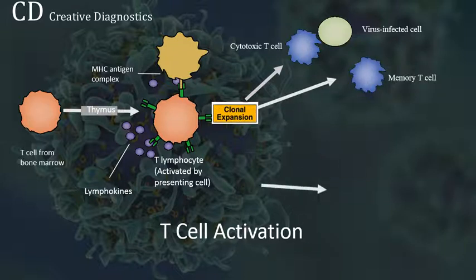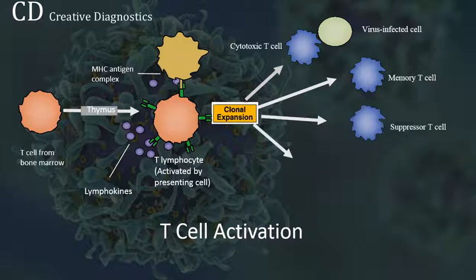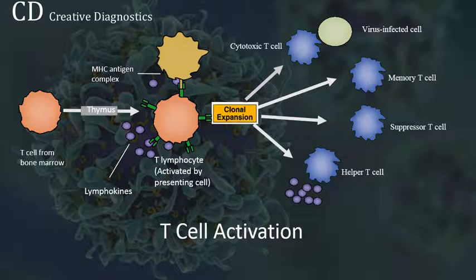Once stimulated by the appropriate antigen, helper T-cells secrete chemical messengers called cytokines, which stimulate the differentiation of B-cells into plasma cells — antibody-producing cells. Regulatory T-cells act to control immune reactions, hence their name.